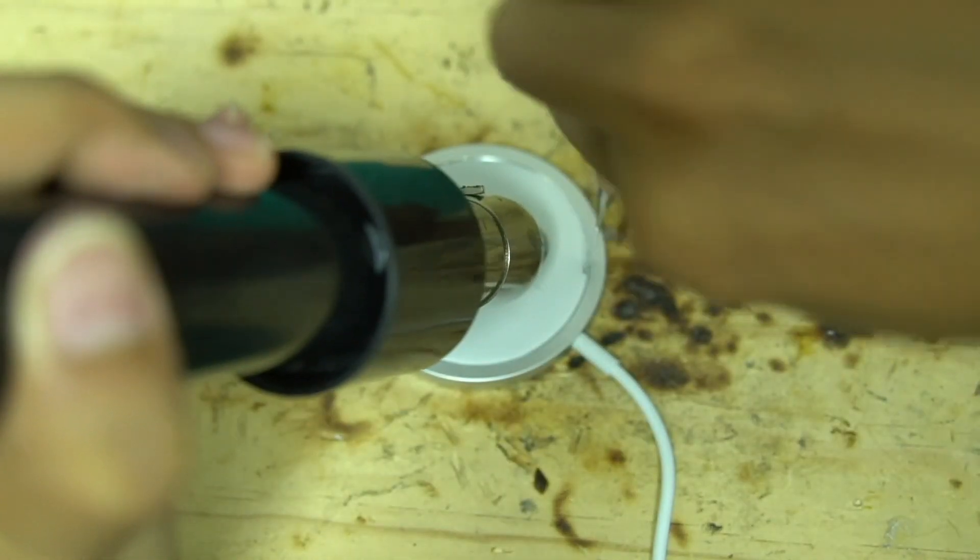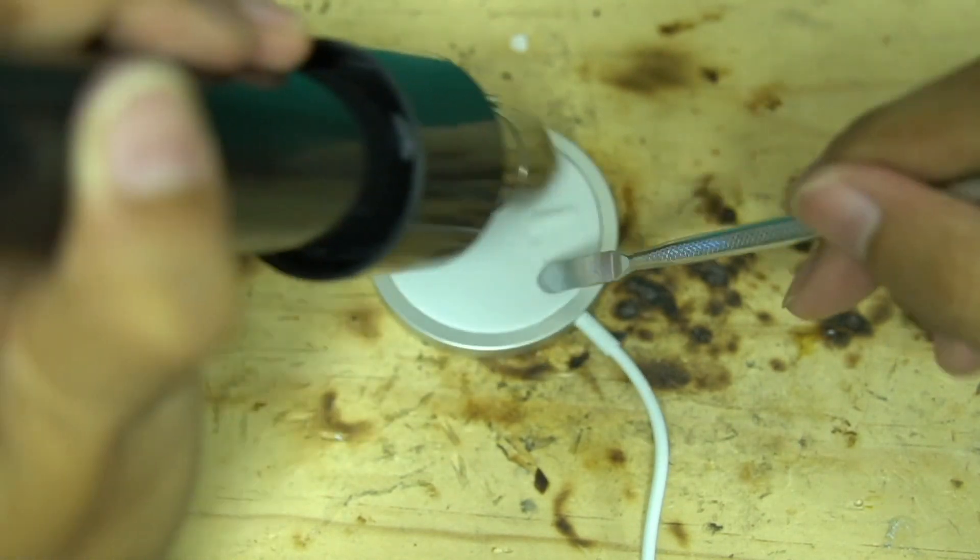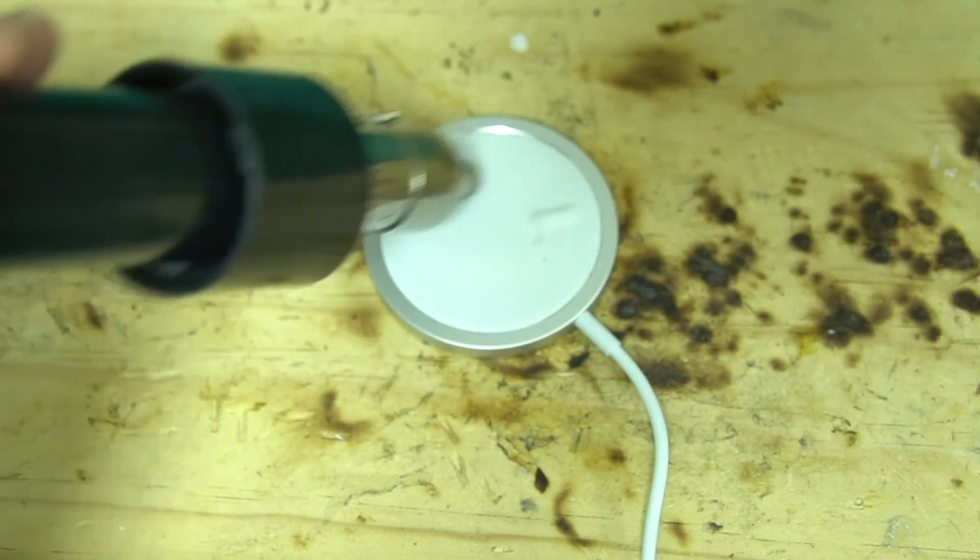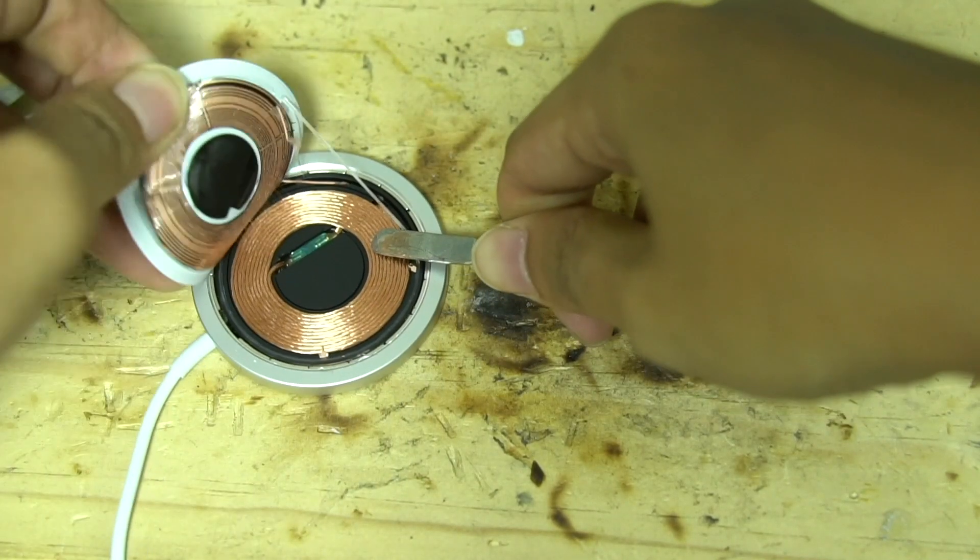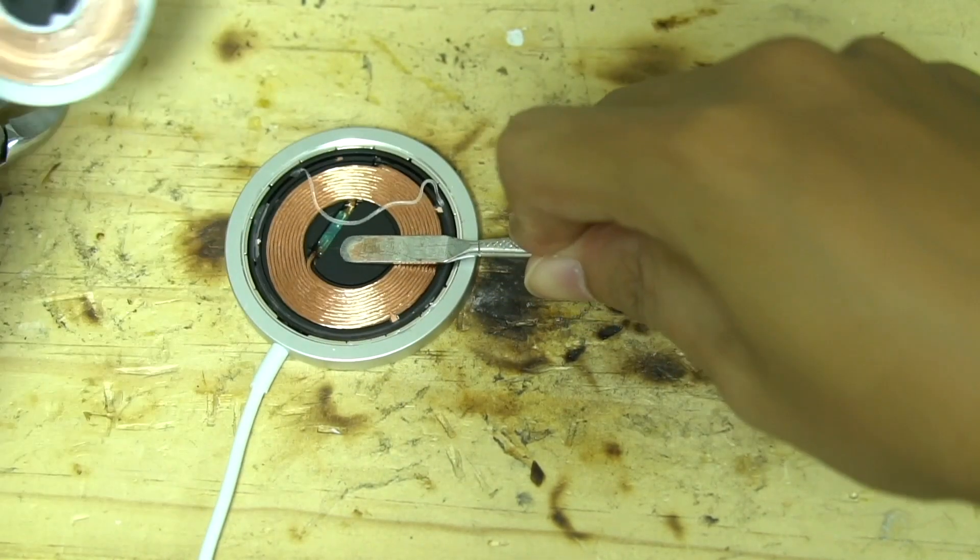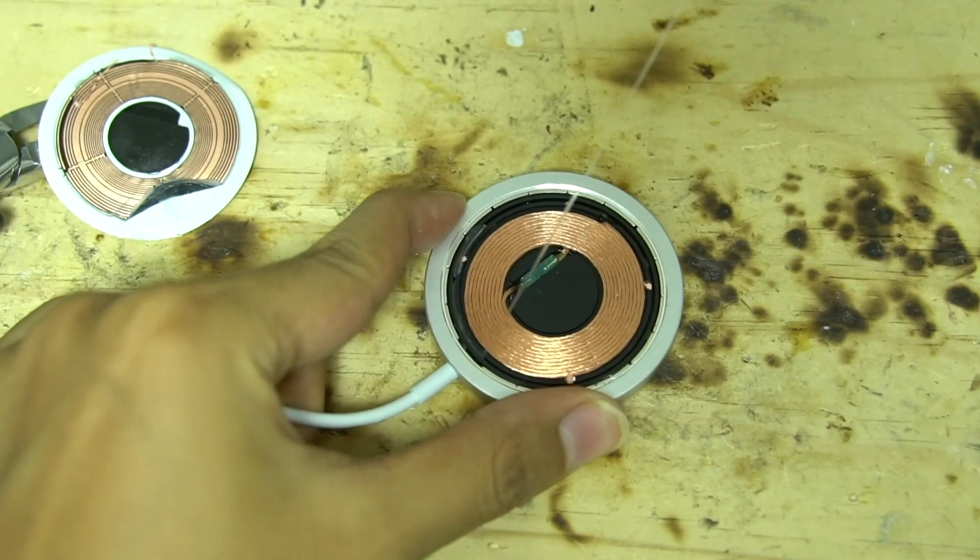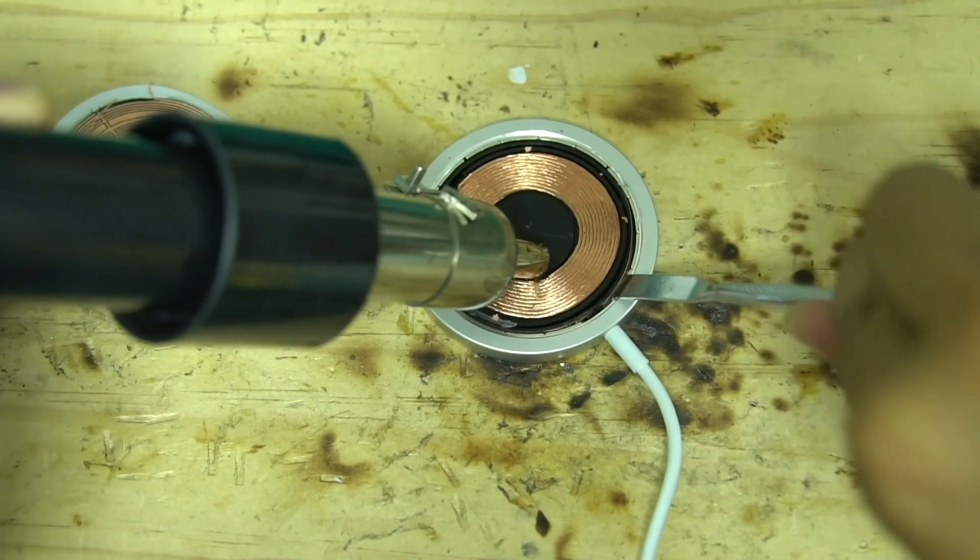Next, let's tear down the charging pad. Remove the upper cover. We can see the charging coil is in the middle, which is fixed and reinforced by glue. The plastic ring can isolate the magnets and coil.